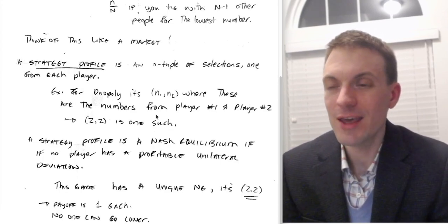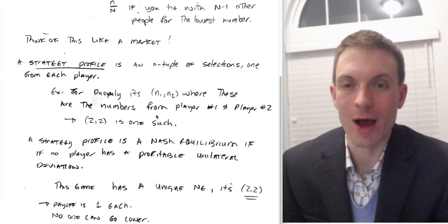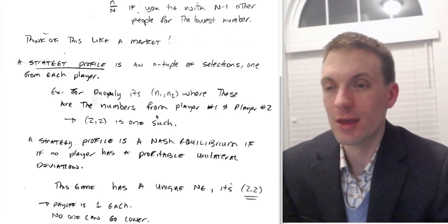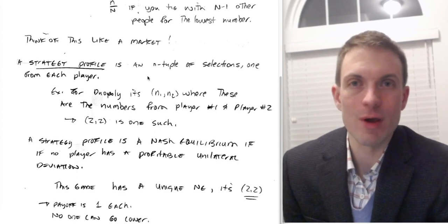Okay, so a strategy profile is an n-tuple of selections, one from each player. So if we have a duopoly, the strategy profile would be a pair. If you have three players, a strategy profile would be a triple. Let's just say we have a duopoly.